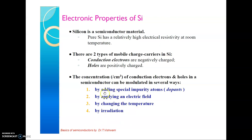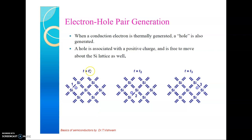When a conduction electron is thermally generated, a hole is also generated simultaneously. When an electron leaves its position, a positive hole — an empty vacancy — is created. As electrons move through the crystal lattice and occupy adjacent holes, the hole effectively moves in the opposite direction throughout the crystal lattice.